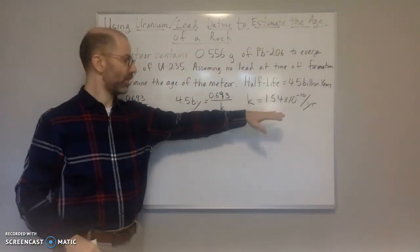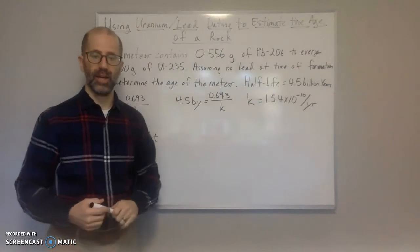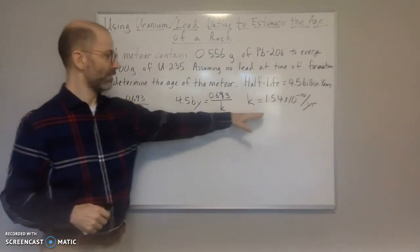And you are going to get 1.54 times 10 to the negative 10, I believe. Let me double check. Yes, negative 10, and that's per year. This is the number per year that is decayed. So now that we have k.